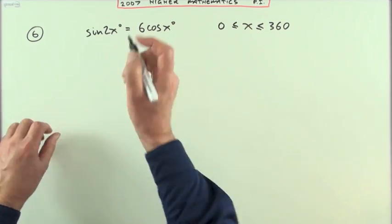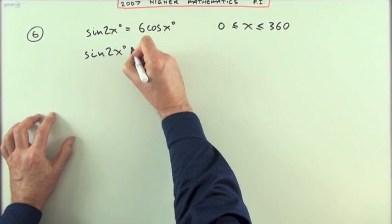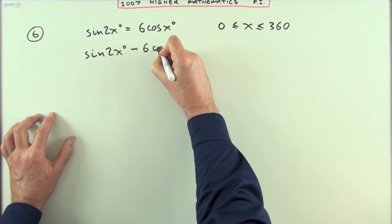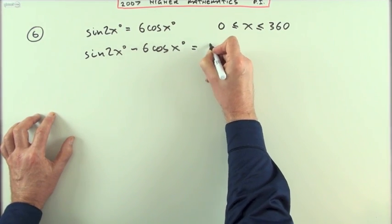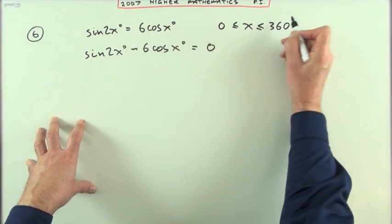Well, the first step is I'll rearrange this into sin(2x)° minus 6cos(x)° equals zero. It'd be so much easier if it wasn't x degrees and I just had the degree signs there.